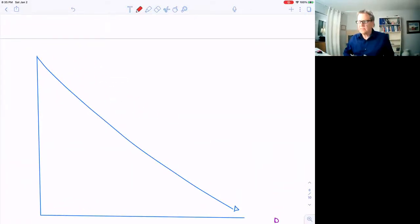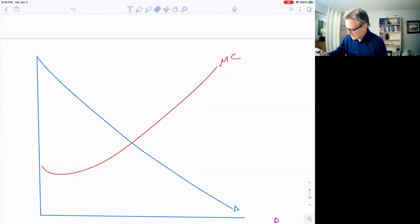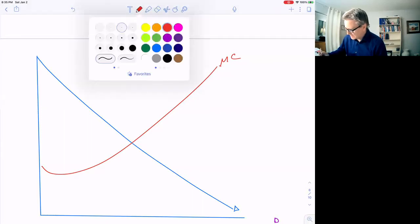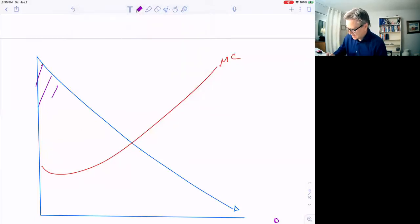So a separate, different price for every single buyer, which means if they do that, they can collect the entire consumer surplus. So if here's the demand curve and here's the marginal cost curve, all this consumer surplus up here can be captured.